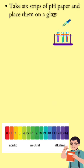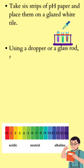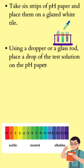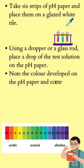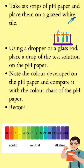Take six strips of pH paper and place them on a glazed white tile. Using a dropper or glass rod, place a drop of the test solution on the pH paper. Note the color developed on the pH paper and compare with the chart.